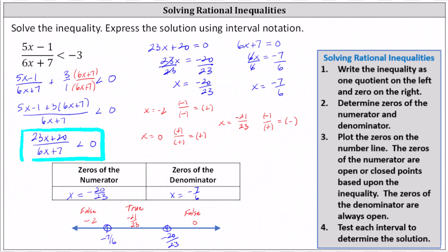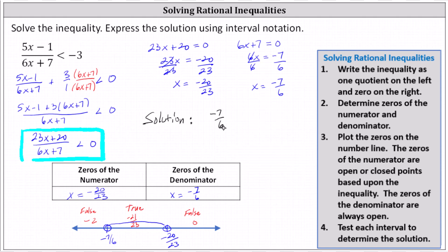The graph of the solution is the middle interval. In interval notation, the solution is the open interval from negative seven sixths to negative 20 twenty-thirds. Because neither endpoint is included, we use parentheses on both sides. If you want to express the solution using inequalities, we would say x is greater than negative seven sixths and less than negative 20 twenty-thirds. Our directions say to use interval notation.